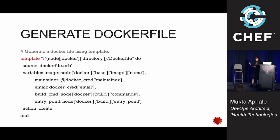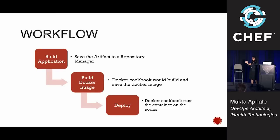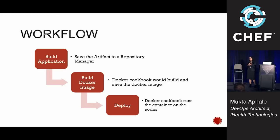There's something more you can do: you can actually generate your Dockerfile using a template. You have a Dockerfile template and give it certain parameters, then build the Docker file using templates. We gradually migrated from the basic workflow to a more mature one: we build the application, save the artifact into a repository manager. Now we could store lots of artifacts and differentiated between the artifact and the image — there was no way of getting the artifact outside the Docker image before. Now we had the artifact, built the Docker image using the Docker cookbook, and deployed using the Docker cookbook itself. This worked very well for us.